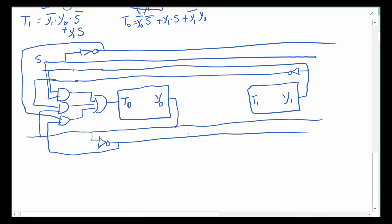Now for T1, we have Y1-not, Y1-not, and S-not for the first term, then Y1 and S for the second term. Y1 comes down here, and S is pulled in without touching anything else. Those AND gates feed into an OR, and there we have T1.